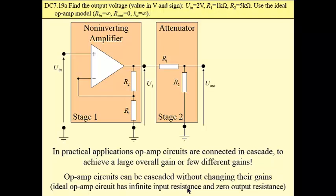So in our case, in our next example problems, we may assume that op-amp circuits can be cascaded without changing the gains, which means that total gain is a product of gains of individual stages. In our case, stage 1 gain is given here.